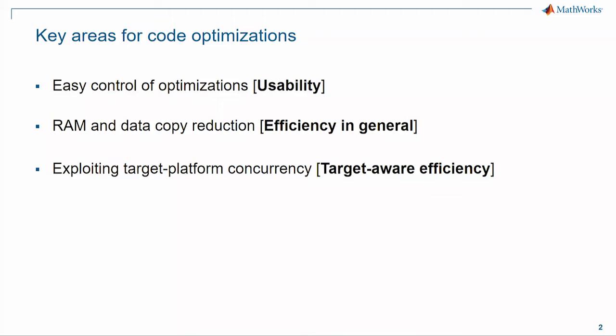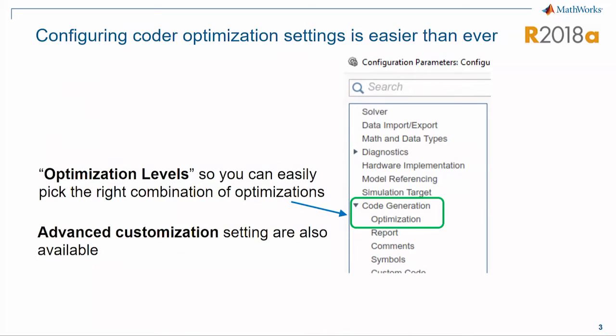These key areas are: improving usability, which is how we can make it easy to control the optimizations; addressing efficiency in general, which comes in the form of RAM reduction and data copy reduction; and increasing target awareness by exploiting whatever available platform characteristics are there, like concurrency.